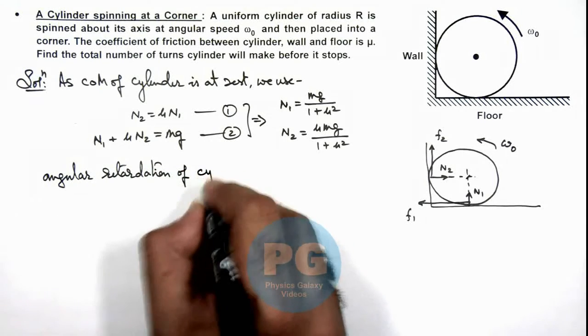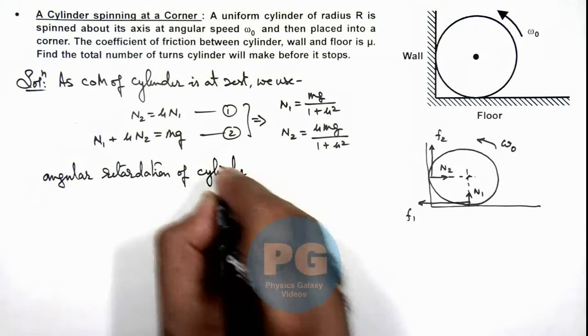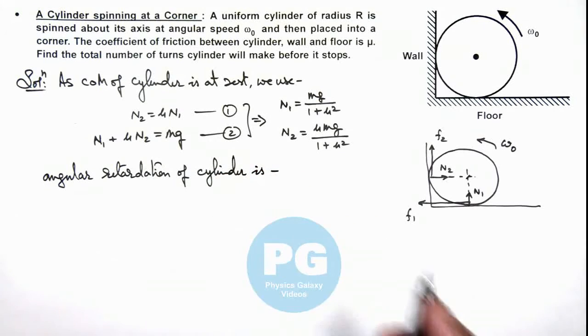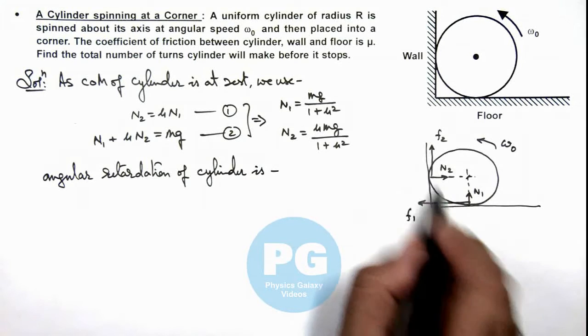Of cylinder. Here cylinder will be having angular retardation due to the torque applied by these 2 frictions.